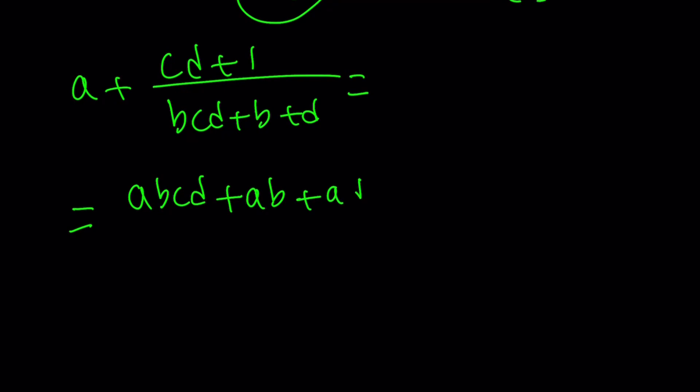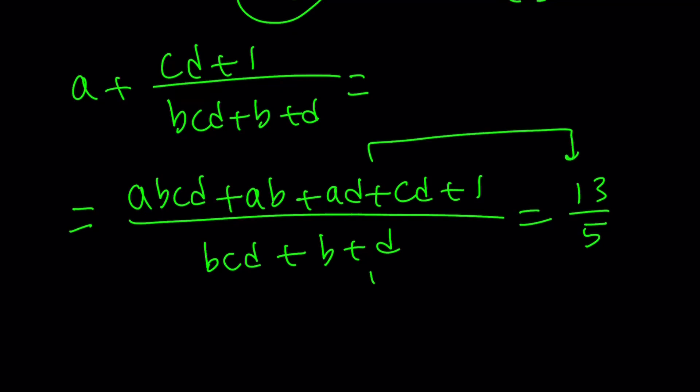This part is easy: A times BCD plus B plus D, plus CD plus 1, all over BCD plus B plus D. I was able to make a common denominator completely, and this is equal to 13 over 5. So A, B, C, D are positive integers. I have a single equation. You can think about it as two equations, but there's also the possibility of multiples of 13 and 5. Good luck solving this equation. I'm not going to solve it.